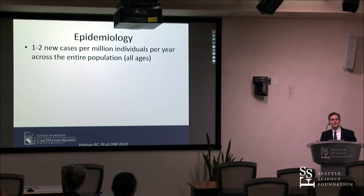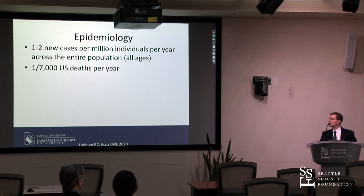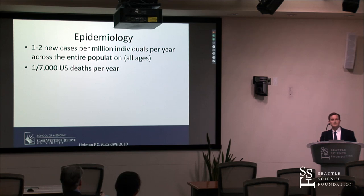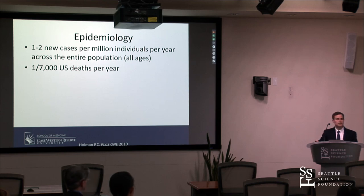Most people have heard the one-in-a-million number, which I think is a little misleading. It's an incidence statistic — one new case per million individuals per year — though the harder you look, the closer you get to two per million per year. A better way to look at it: about one in every 7,000 deaths in the U.S. is due to prion disease. For example, at a football game with 20,000 people, about two or three will develop CJD at some point during their lifetime. It's not common, but it's not super rare either.